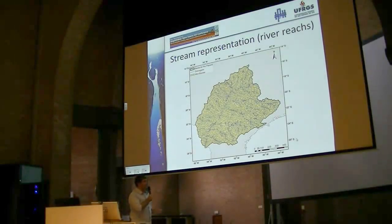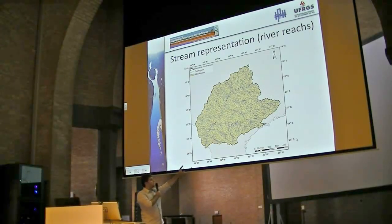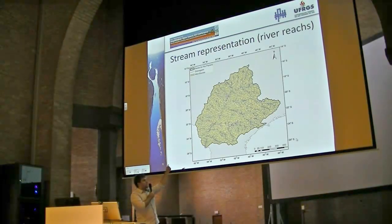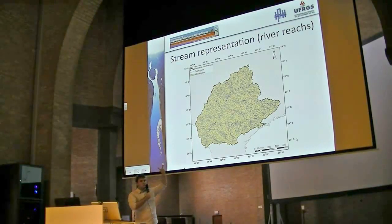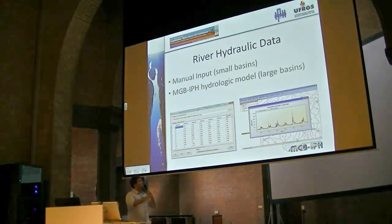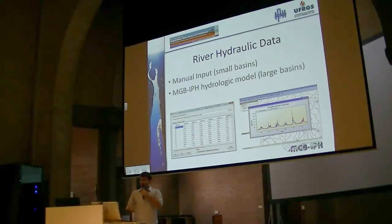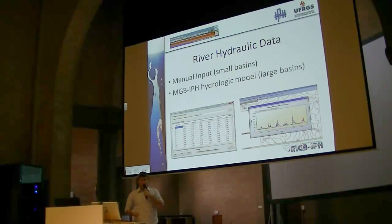This is how we consider the basin. We simply represent a stream by subdividing it into river reaches, so we represent all the basins with very small segments. For small basins, you can manually input the data, but if it's a large basin like the one I showed before, we can direct the results from the MCBAPH model that is also developed in our laboratory.